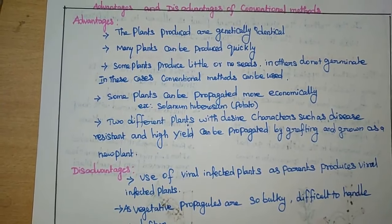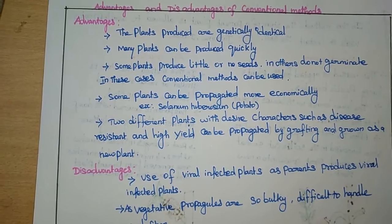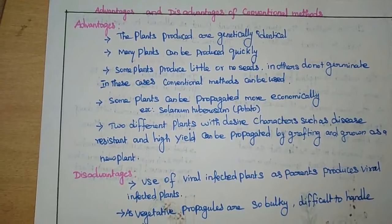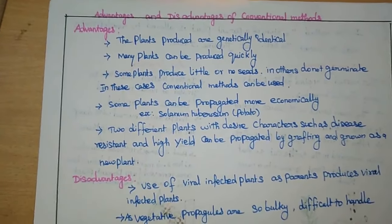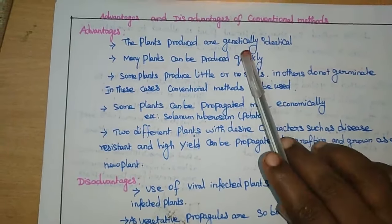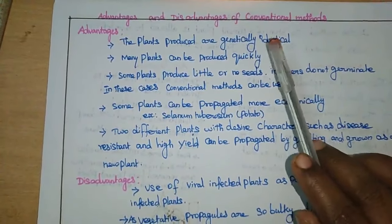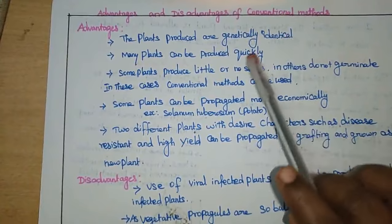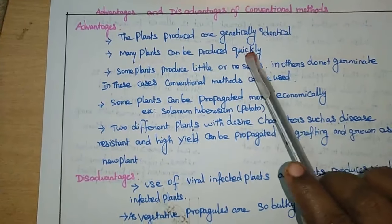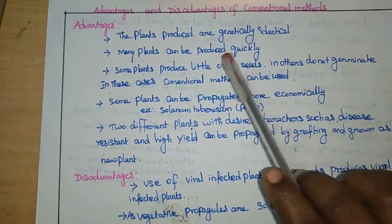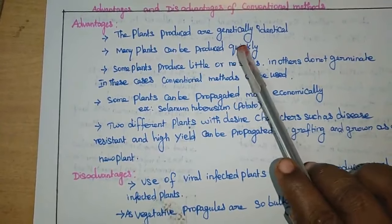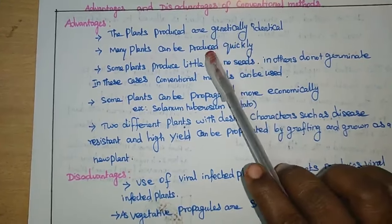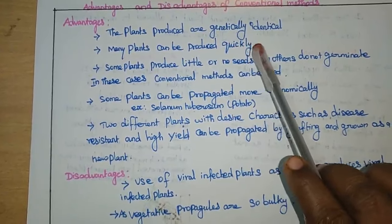Now we are going to discuss the advantages and disadvantages of these conventional methods. Advantages: the plants produced are genetically identical, so they will have genetic identity with their parent. Many plants can be produced quickly, so if we want to produce thousands of plants, we can do so in large-scale cultivation.